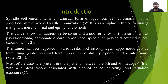This tumor involves various sites such as the esophagus, upper aerodigestive tract, GIT, breast, hepatobiliary systems, and genitourinary system. It has a predilection for male patients ranging between the 6th and 8th decades of life. An associated history of alcohol abuse, smoking, and radiation is also present.